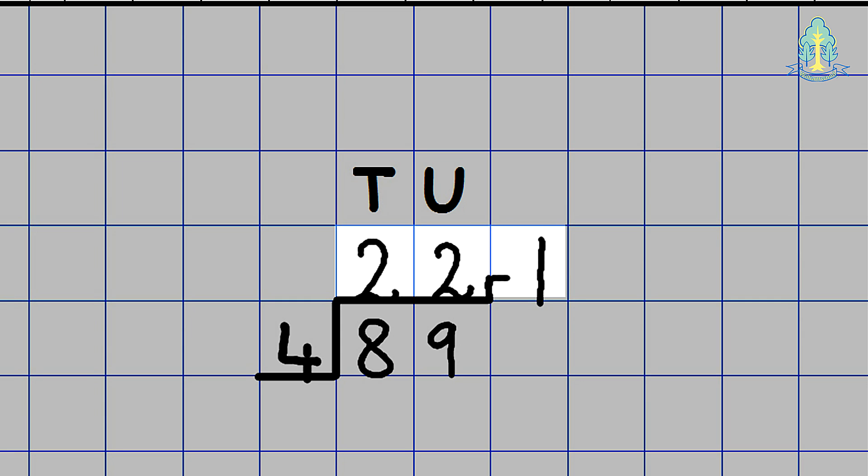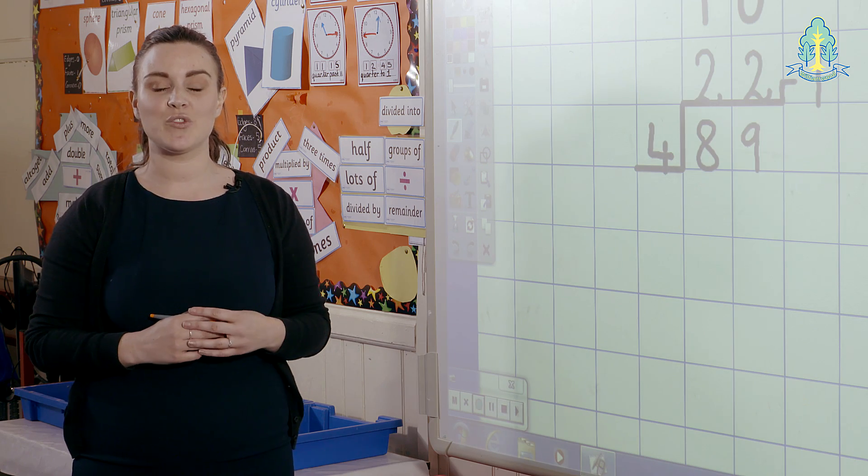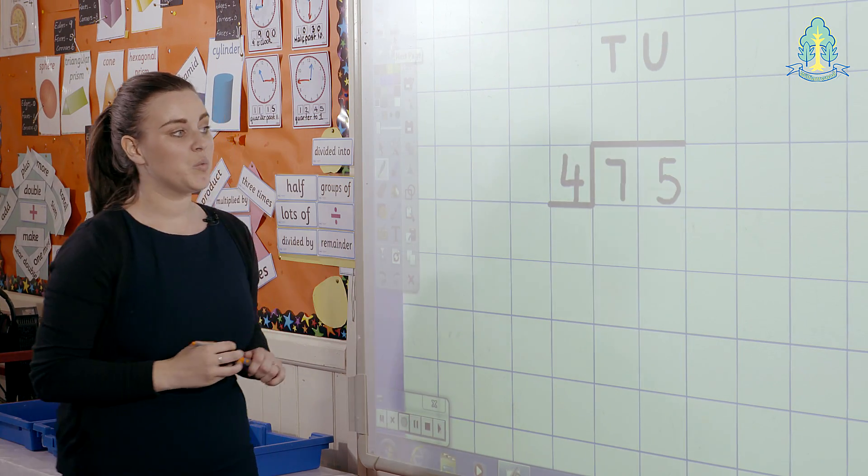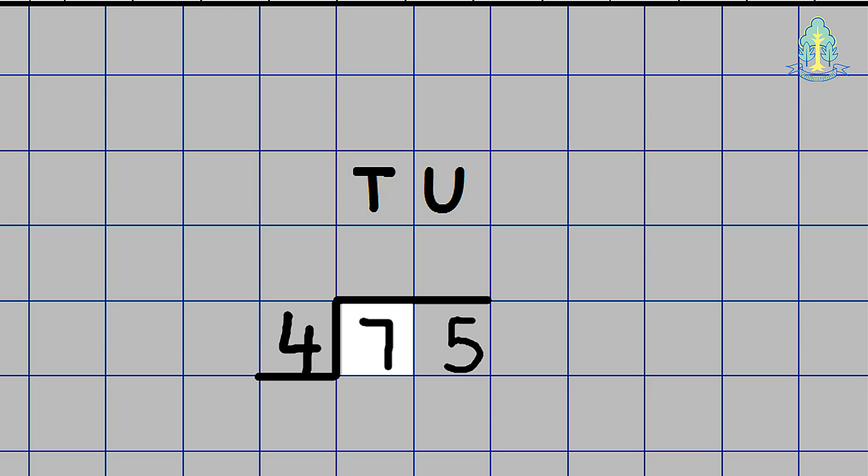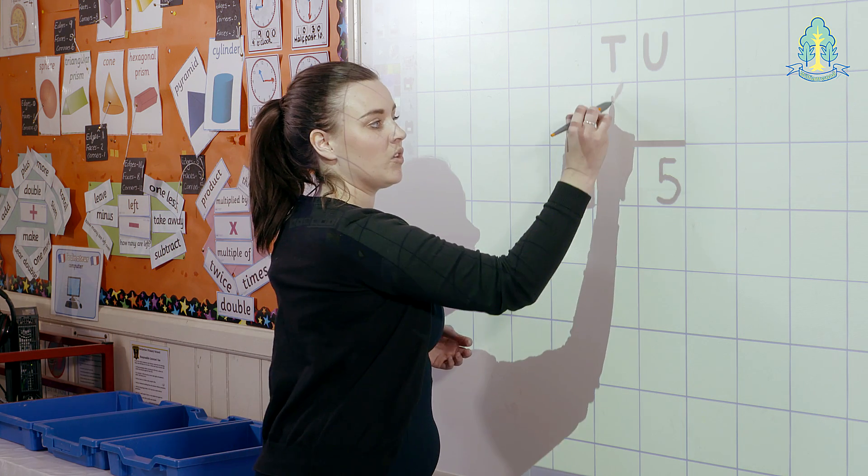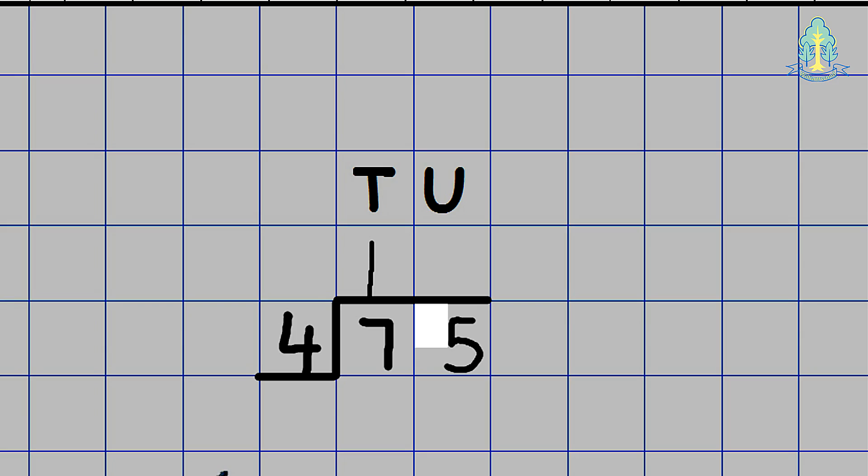A more advanced example would be one which involves carrying a remainder from the tens to be exchanged for units. We would say how many 4's are in 7? The children would say 1 with a remainder of 3. The 3 which is the remainder would be placed in the column to the right.